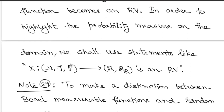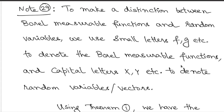To highlight the probability measure in this connection, we write: X from (Ω, F, P) to (R, B(R)) is a random variable. So for the measurable structure we write the sigma fields on both sides, but now we include the additional information from the probability measure on the domain side. We will explore the connection between the measurable structure and the probability measure later, but we will keep track of the probability measure on the domain side. There is an important distinction between Borel measurable functions and random variables.